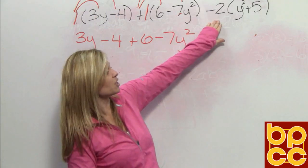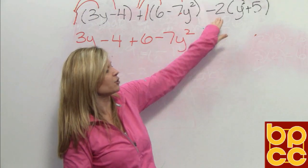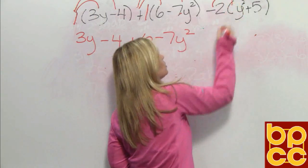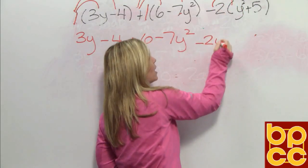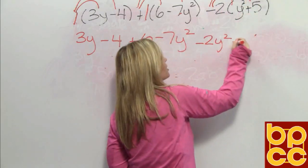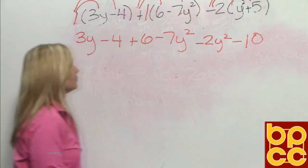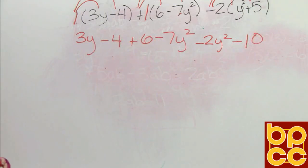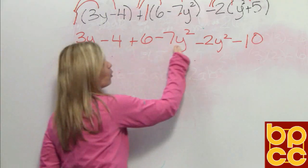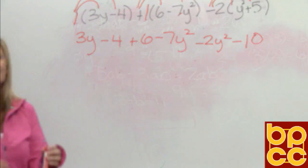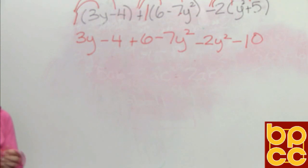Now if we go to the third parentheses, we do have a number to distribute. It's a negative 2. So negative 2 times y squared is negative 2y squared. Negative 2 times positive 5 is negative 10. Now if you look, we have freed all our terms. We have 1, 2, 3, 4, 5, 6 monomials. Now let's find the ones that are alike and put them together.